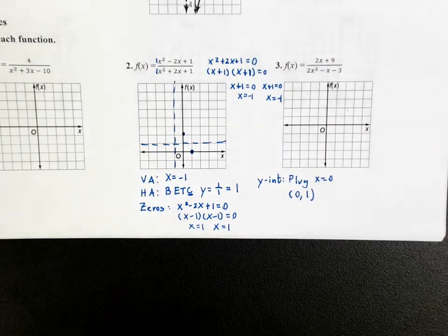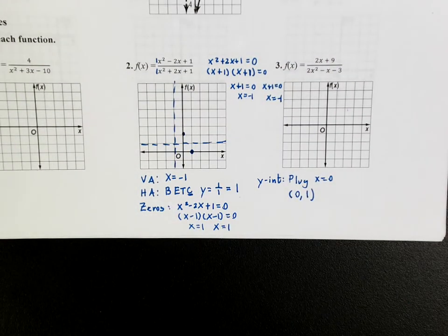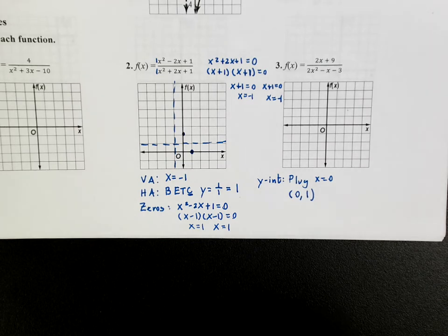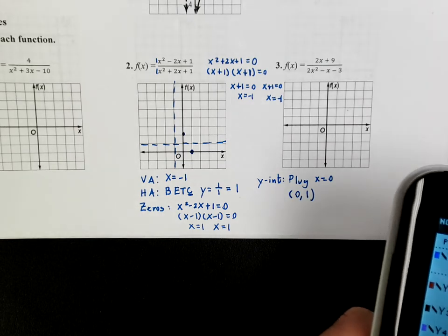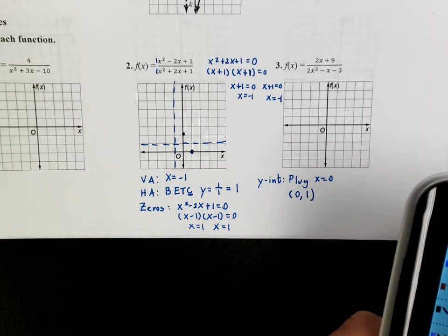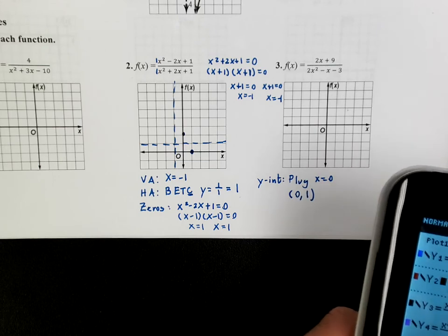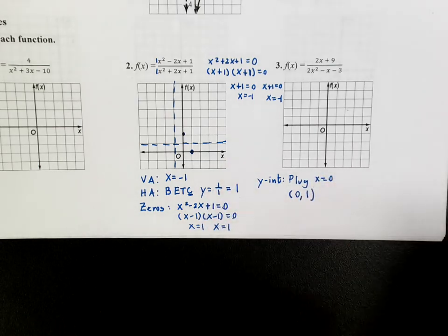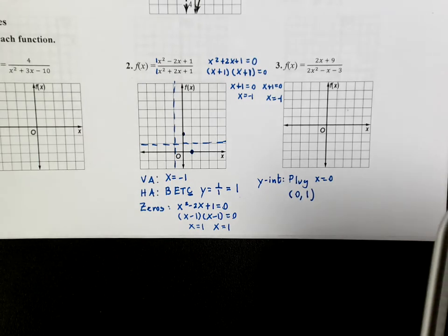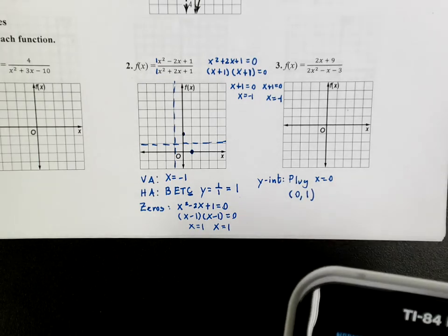At this point you can use a calculator, because otherwise you'd have to make up your own table and it would take quite a bit of work to tell what's going on. But finding the vertical asymptotes, horizontal asymptotes, zeros, and y-intercept — this is definitely stuff I need you to be able to find without a calculator.